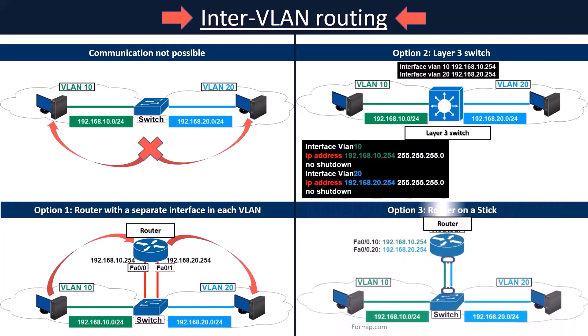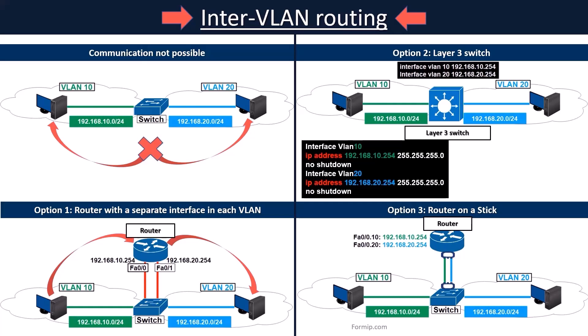The last option is known as Router on a Stick. The advantage of this solution is that the configuration of inter-VLAN routing does not require blocking a physical interface per VLAN. It is possible to create sub-interfaces that each belong to the IP subnets of the different VLANs, meaning a single physical interface connects traffic between multiple VLANs. The router performs inter-VLAN routing using its sub-interfaces.